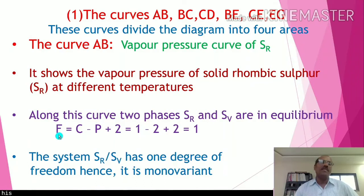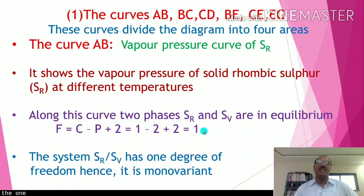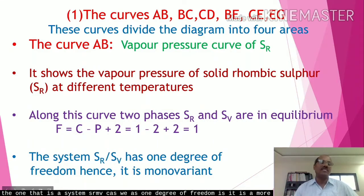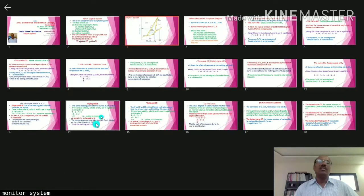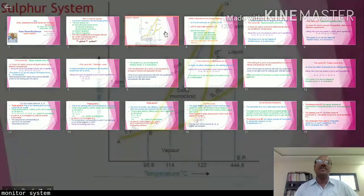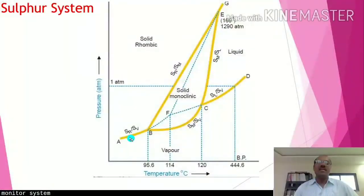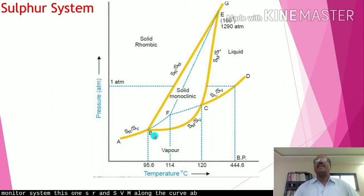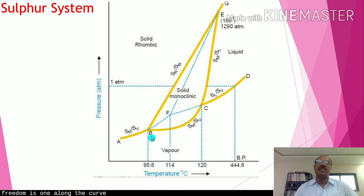The degree of freedom F = C − P + 2. With C = 1 and P = 2, F = 1 − 2 + 2 = 1. Hence the system along curve AB is monovariant — SR and SV are in equilibrium with one degree of freedom.